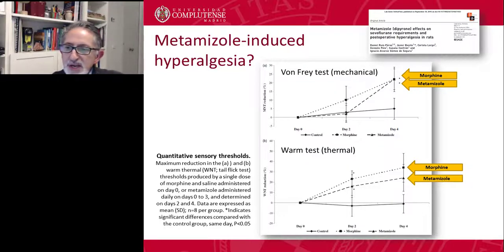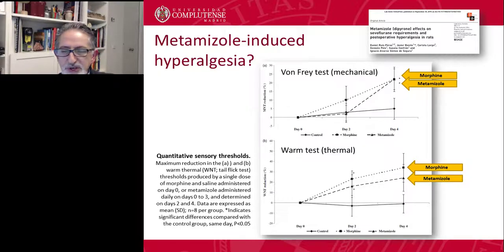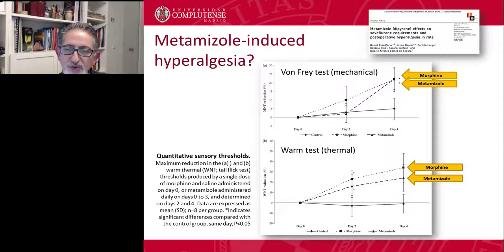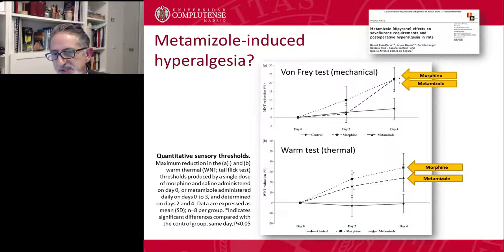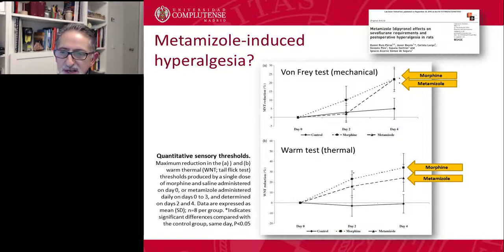Recently, we also looked at non-opioid drugs. In this case, we studied metamizol — a drug not used in the United States or Canada, but quite popular in Spain, France, or Germany — mainly because in contrast to NSAIDs, metamizol does not produce good anti-inflammatory action, but at the same time does not produce significant adverse effects. So it's popular in the perioperative period. We tested this drug together with morphine, gave these two drugs to rats, and several days later — two days and four days — we found that hyperalgesia was present similarly for both drugs, producing a similar level of hyperalgesia in both the von Frey test for mechanical thresholds and the thermal warm test.